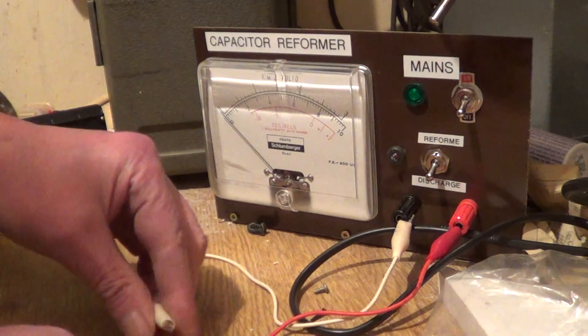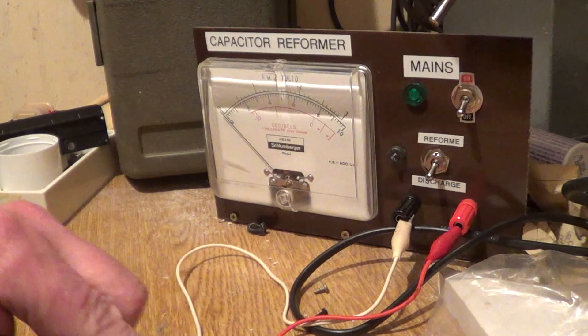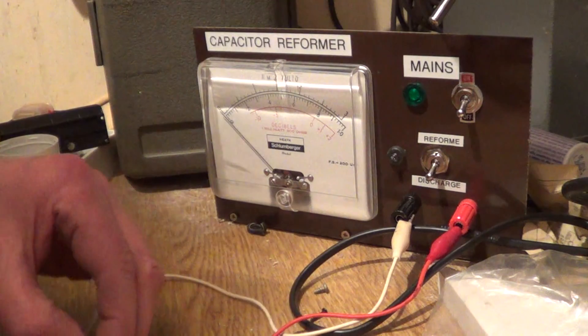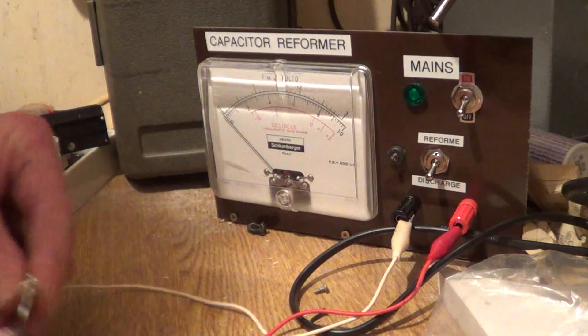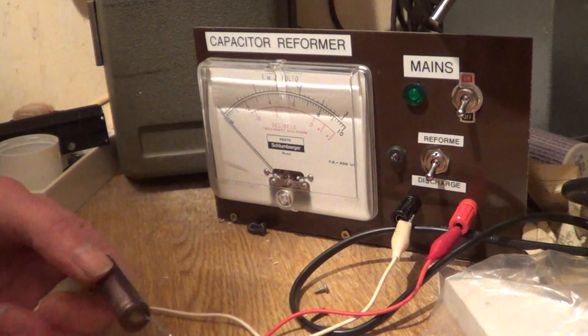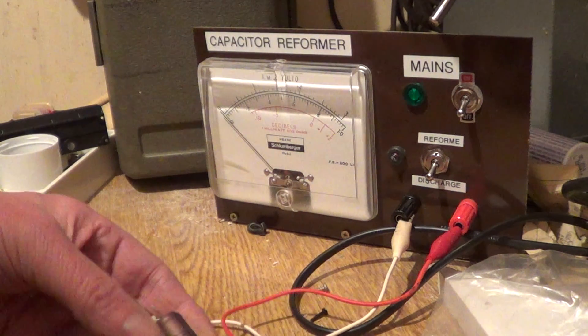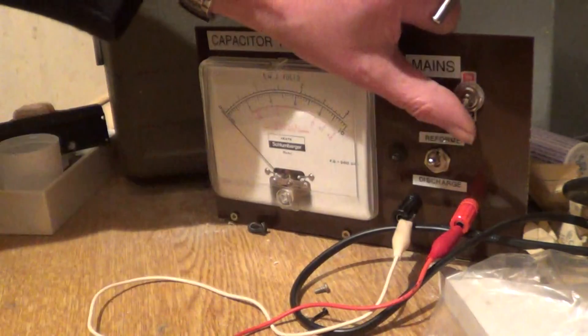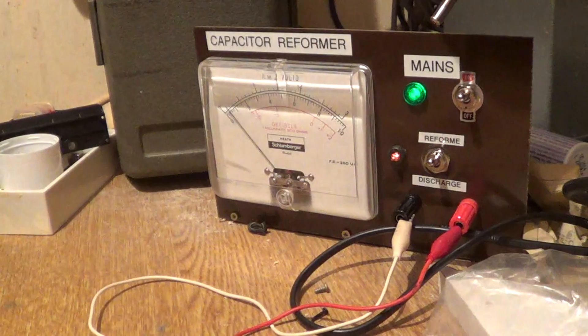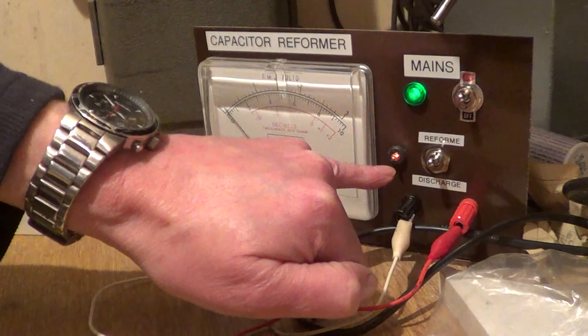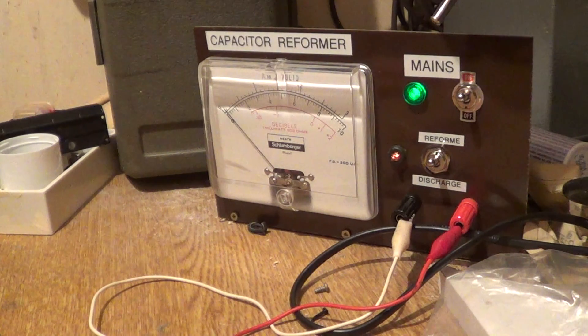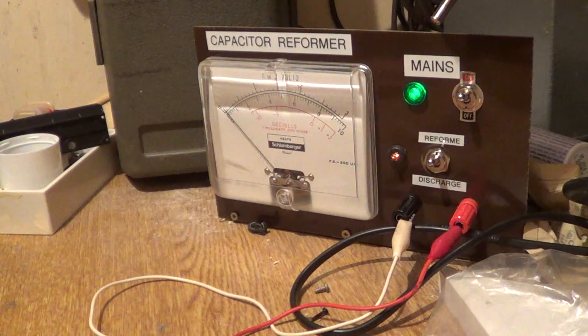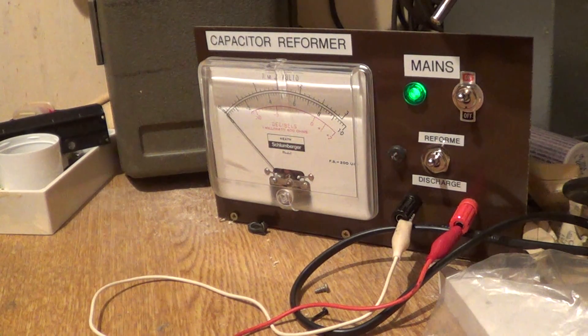We'll change that one. We now have a 2 microfarad 350 volt electrolytic, which will because it's unreformed show very little leakage and the neon, if you can see it on the film, is only just glowing and now it's flashing.